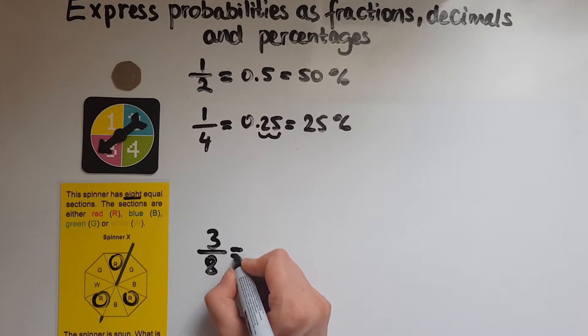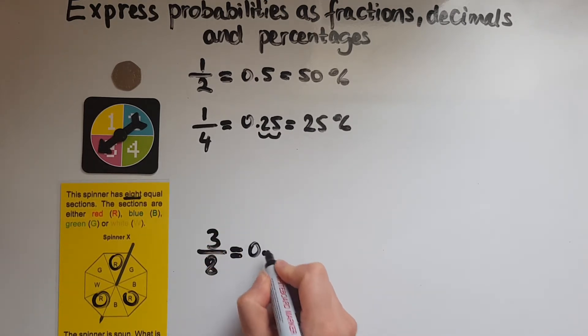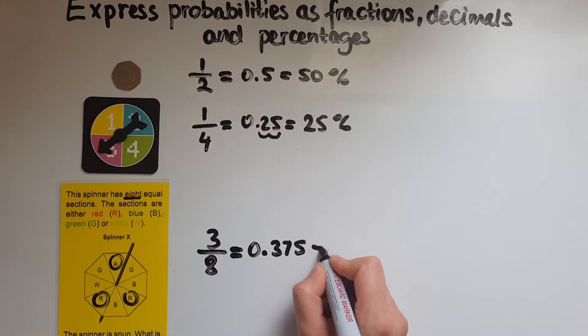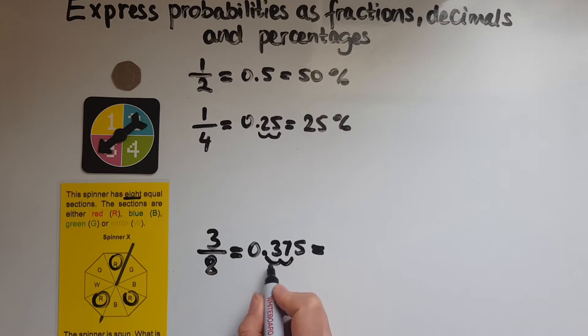So what I do now is 3 divided by 8, which gives me 0.375. So that's as a decimal. As a percentage, we've got two decimal places after the decimal point. So that makes it 37.5%.